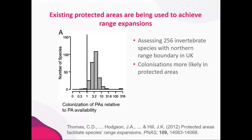We also know that existing protected areas are being used to achieve range expansions in the UK. For species expanding their range, where they end up tends to be in protected areas. In this figure, the vertical line represents an even chance of ending up in a protected area or not. Species to the right of the line are more likely to end up in a protected area — in general they're three times as likely. So the habitat network in Britain is functioning to facilitate range shifts, but we also have evidence that it's not good enough for all species that will need to move.